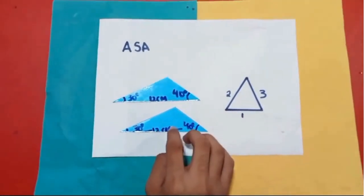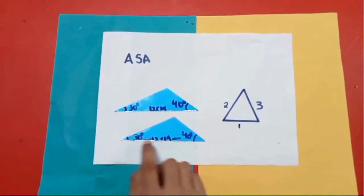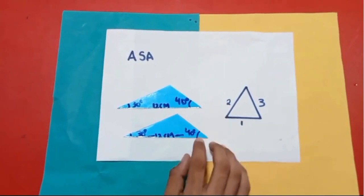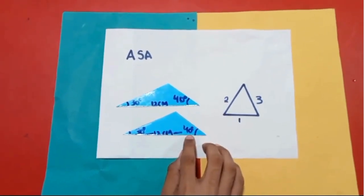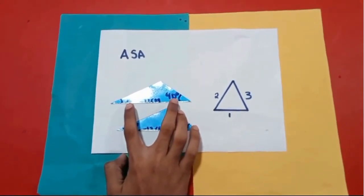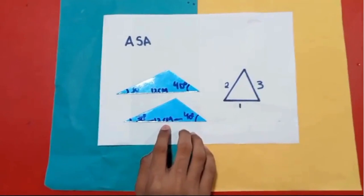Carefully see here, the angle is 30 degrees and here also the angle is 30 degrees. And this angle is 40 degrees and this angle also 40 degrees. And the side between the angles is 12 centimeters and this side is also 12 centimeters.